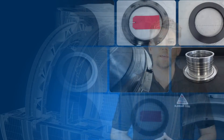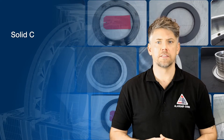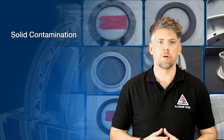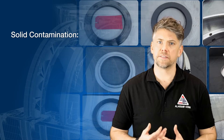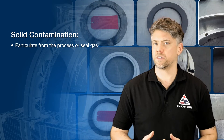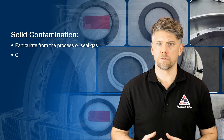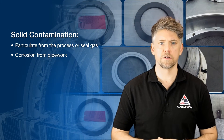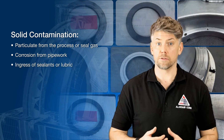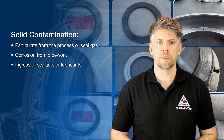Dry gas seal contamination can be defined as two types: solid and liquid contamination. Solid contamination may be caused by particulate from the process or seal gas, corrosion from pipework, or ingress of sealants or lubricants.